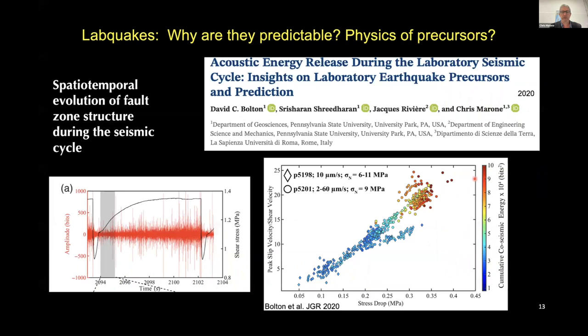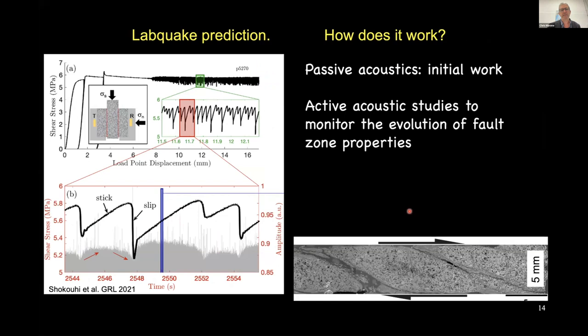A lot of the early work was done with passive recordings, just listening to the fault. But we've also started looking at active source information. I put this slide here to remind us why this is interesting — we know it's possible to predict lab earthquakes, but we're really working hard on understanding why it's possible. We don't really know the physics of why it works. This is stress drop as a function of peak slip velocity for a range of events from fast to slow, and the cumulative seismic energy for faster, bigger stress-drop events is larger — there are systematics we can use to understand what's going on.